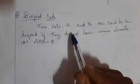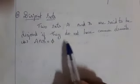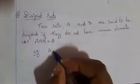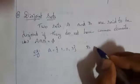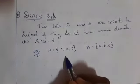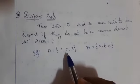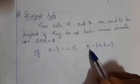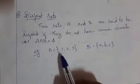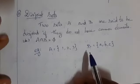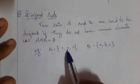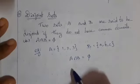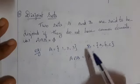Disjoint sets. Two sets A and B are said to be disjoint if they do not have common elements. For example, if set A has {1, 2, 3} and B has {A, B, C, D}, the elements present in A are not present in B, and the elements present in B are not present in A. Therefore, the intersection of these two is empty — A intersection B is empty. There are no common elements, therefore these two sets A and B are disjoint sets.